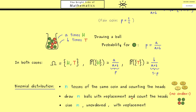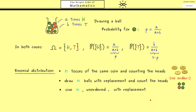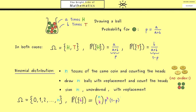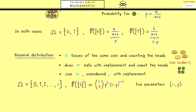Since we are only interested in the number of heads, the sample space ranges from 0 to n. As before, this is discrete, so the probability measure is given by a probability mass function. The probability of k heads is: binomial coefficient n choose k, times p to the power k, times (1-p) to the power (n-k). The binomial distribution has exactly two parameters: the size n and the probability p.